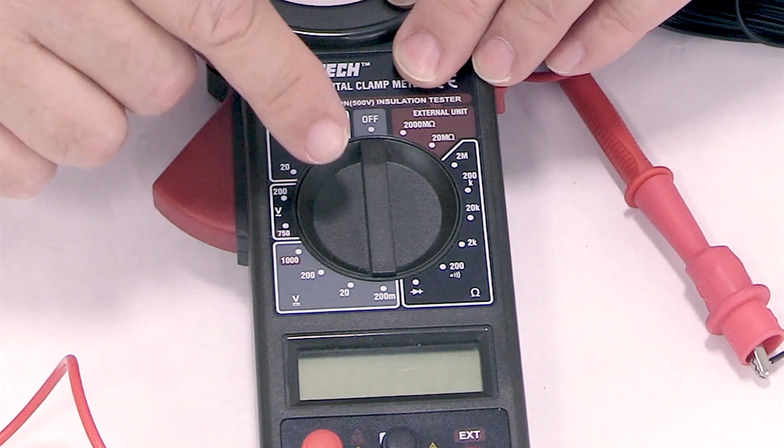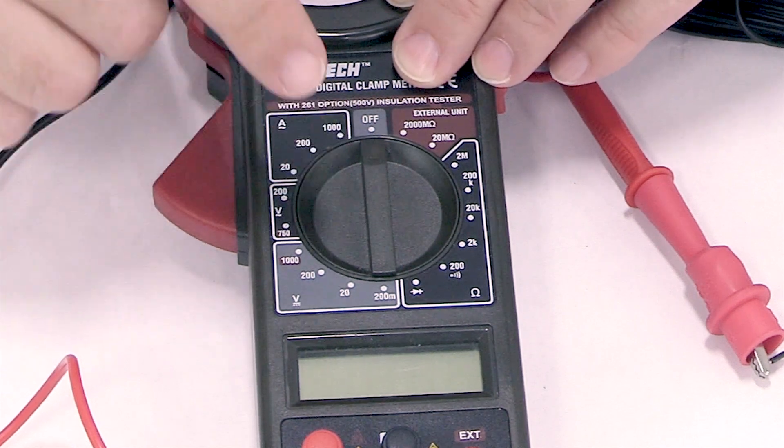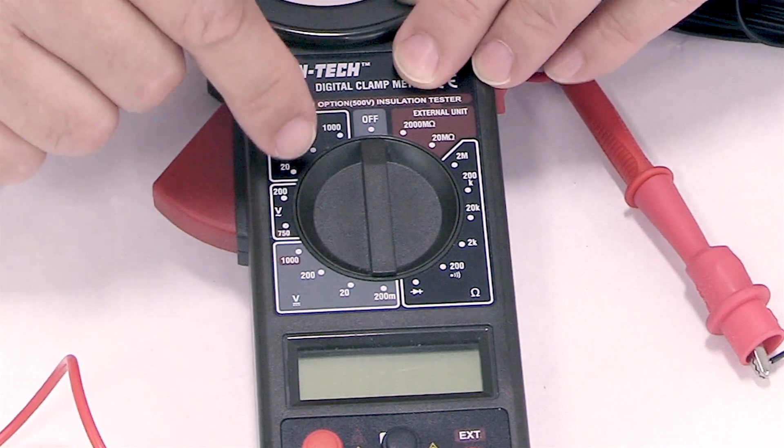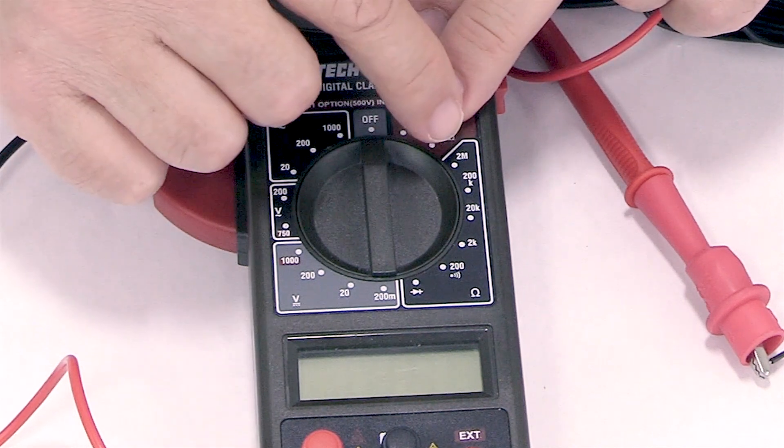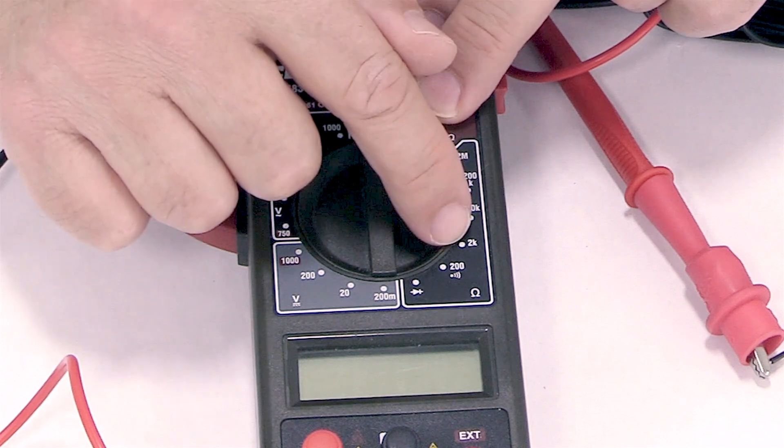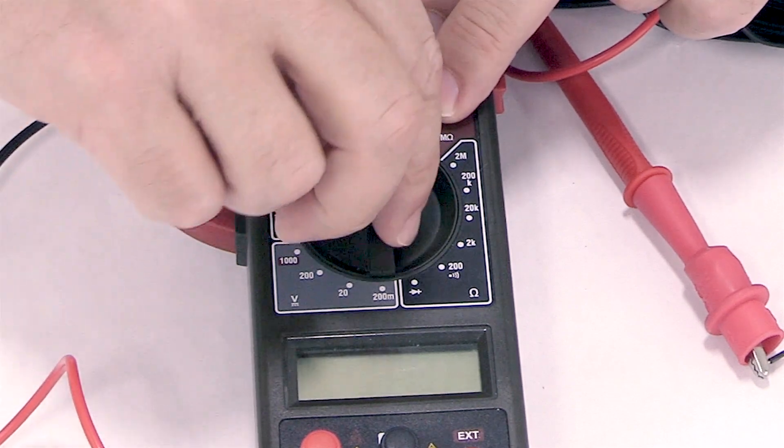So the digital ohmmeter that we have is the one that you want to try to find. It's a non-ranging ohmmeter. And what I mean by non-ranging means that you select the actual range yourself with this knob.